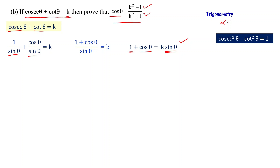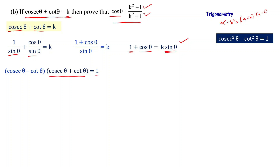This identity uses the a squared minus b squared formula: a squared minus b squared equals a plus b times a minus b. So cosec squared theta minus cot squared theta can be written as cosec theta minus cot theta times cosec theta plus cot theta equals 1. We already know cosec theta plus cot theta equals k, so substituting: cosec theta minus cot theta times k equals 1.